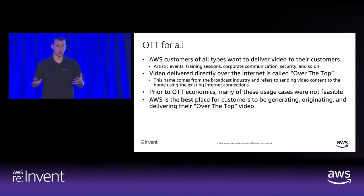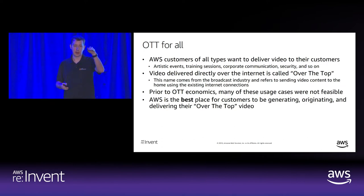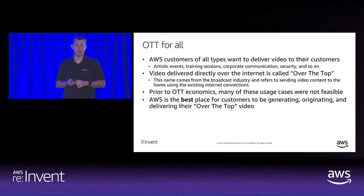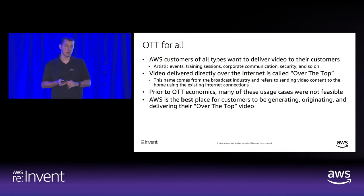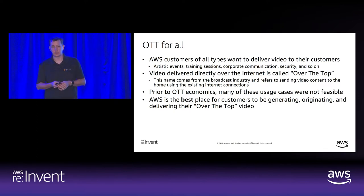When we deliver video to a customer over the internet, that's called over-the-top, or OTT. This term originated from the broadcast industry, where we said there are traditional delivery channels — satellite, cable TV, or over the air — but now we can also deliver video directly using internet connections. Before the advent of OTT technologies and OTT economics, a lot of these use cases just weren't feasible. You couldn't assemble a big enough audience, or the audience couldn't pay enough to make traditional broadcast technologies viable.